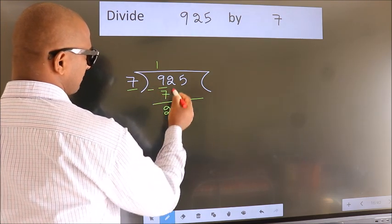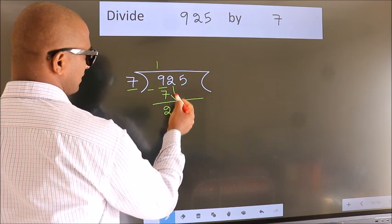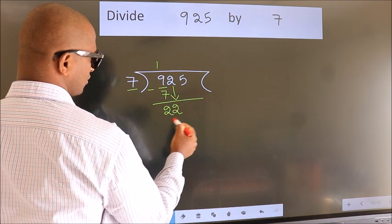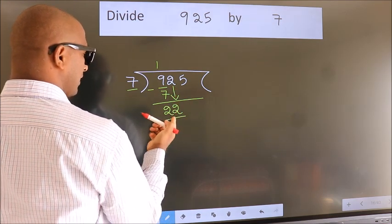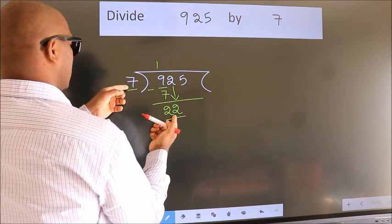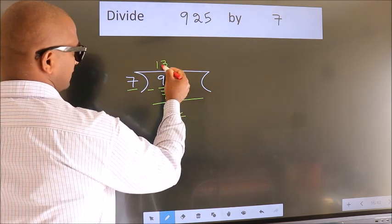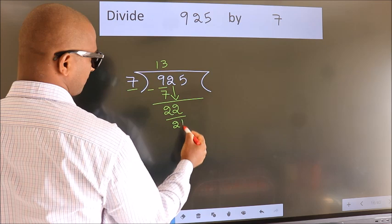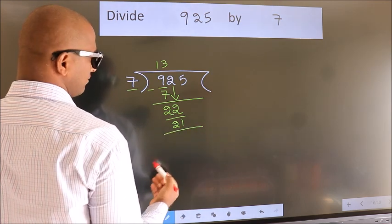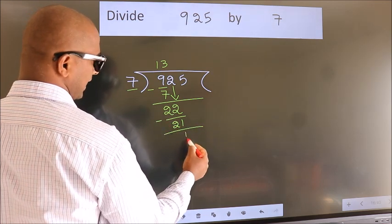After this, bring down the beside number. So, 2 down. So, 22. A number close to 22 in 7 table is 7 threes, 21. Now we subtract. We get 1.